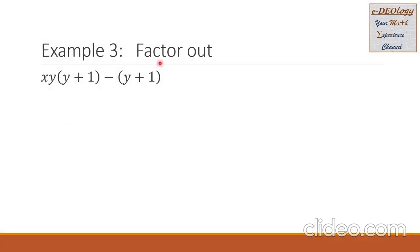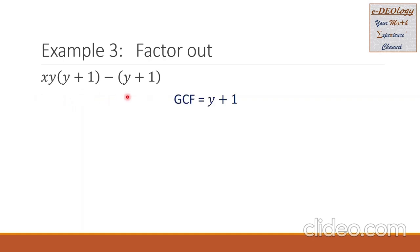Example 3: factor out xy times the quantity y plus 1, minus the quantity y plus 1. We can see that we have two groups here. Analyzing the two groups, the GCF is the binomial y plus 1. Let us now factor out the two groups — first, we copy the GCF times the polynomial.